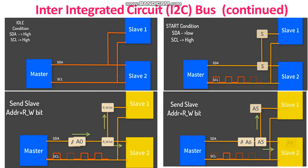Let us see the sequence of operations in the I2C bus. The pull-up resistors of 2.2k make the output lines high, which creates the idle condition — in the idle condition, SDA and SCL will be in the high state. To start the data transfer, SDA should go low while SCL remains high. That is, the master device pulls the clock line high and then pulls the data line low.